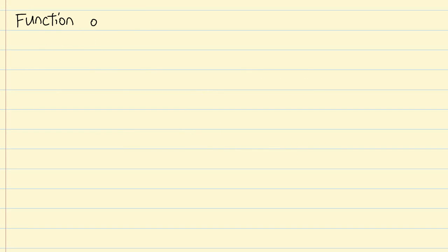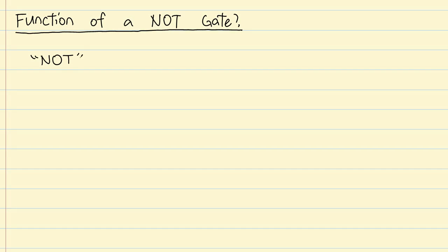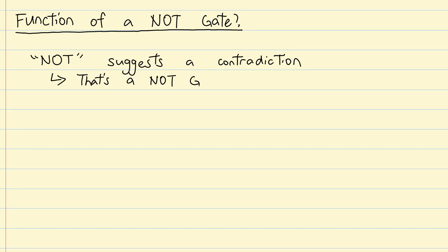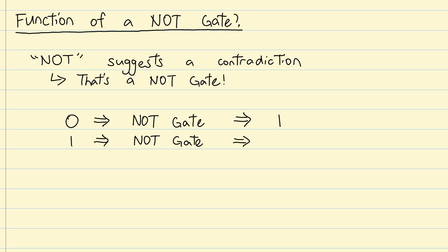I'm sure you could take a guess at what a not gate does. The word 'not' suggests a contradiction, and that's exactly what a not gate does. If it receives a 0 as an input, it'll produce 1 as an output. Similarly, receiving 1 as an input results in an output of 0. This behavior has led to the not gate being sometimes known as an inverter.